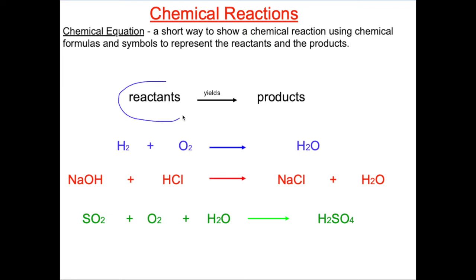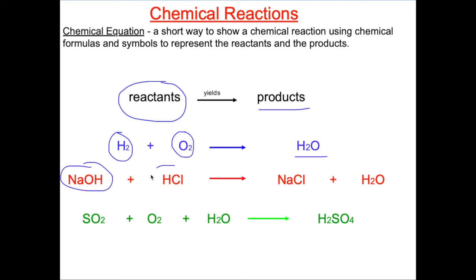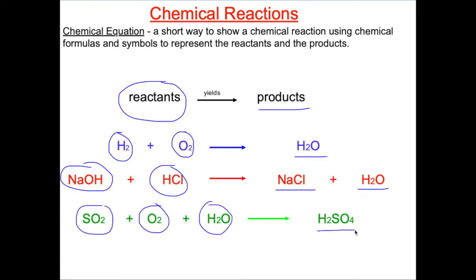The reactants are on the left and the products are on the right. You can have two reactants yielding a single product, or you could have two reactants mixing together to form two products. You could even have three reactants yielding a single product, or a single reactant yielding several products.